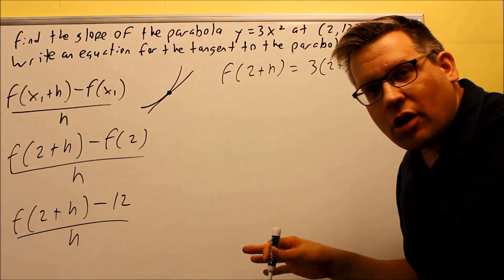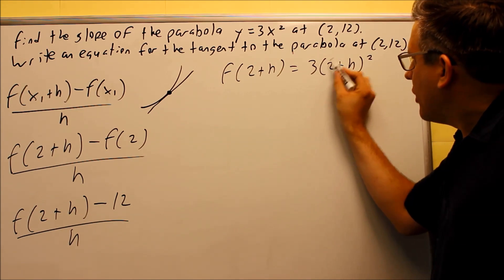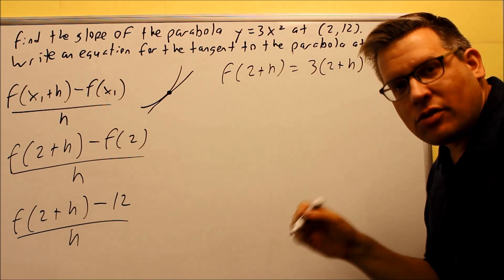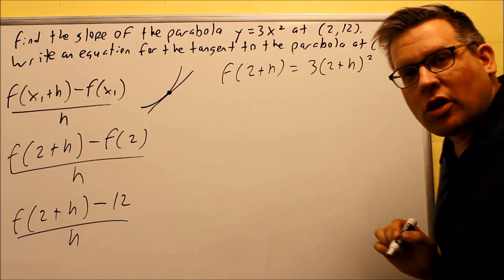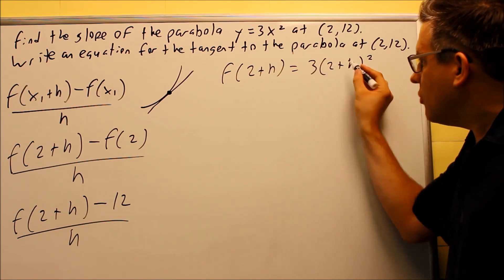First of all, I don't want to see any of you guys making this mistake. Don't multiply the 3 inside the parentheses. You can't do that because you've got to square it first. You've got to follow your order of operations.